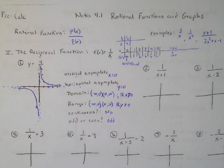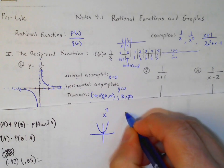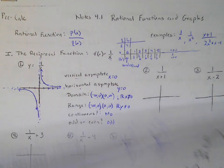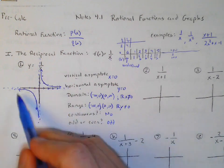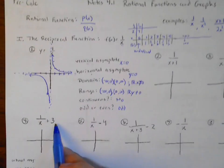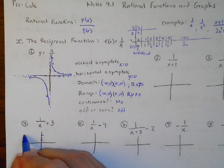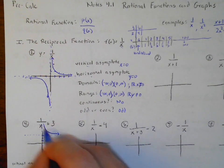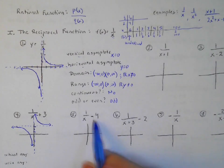The same thing goes for graphing transformations. If I had y equals x squared, that's a parabola with vertex at (0,0). If I did x squared plus 2, it shifts up 2 units. Same idea here with rational functions — we draw these asymptotes and sketch our graph in. So if I have plus 3 at the end, it shifts the horizontal asymptote up three, while the vertical asymptote doesn't move.